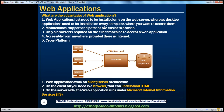If you want to access the Google web application, you don't have to install that application on a client machine. All you need is a browser that can understand HTML, and you can access that web application. Another advantage is that maintenance, support, and patches are easier to provide. For example, if there's a bug in a desktop application, that patch has to be applied on all 50,000 computers — imagine how much time and effort that takes. Whereas if it's a web application, you just apply the patch on the web server, and all your users who fire up their browser and point to the URL will now have the upgraded or patched application.